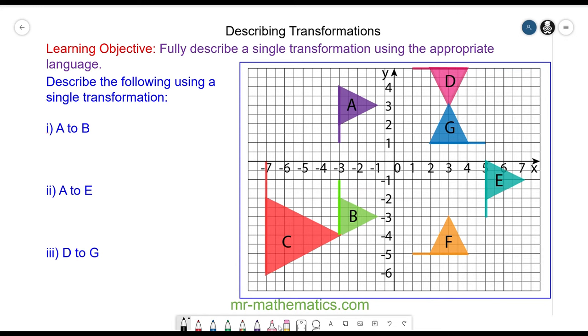Hello and welcome to our lesson on describing transformations. When we describe transformations we need to know whether the two shapes are congruent or similar. If they are congruent it will either be a rotation or a reflection or a translation. If the two shapes are similar, it will be an enlargement.